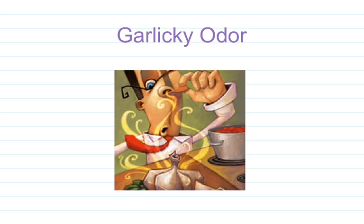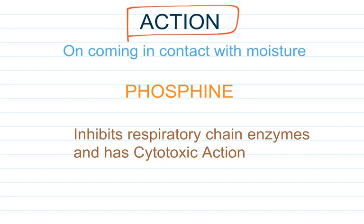Aluminium Phosphate has a garlicky odor, which is one of the main characteristic features of Cellphos poisoning. Now let's talk about the action of Aluminium Phosphate. On coming in contact with moisture, Aluminium Phosphate liberates Phosphine. This Phosphine inhibits respiratory chain enzymes and has cytotoxic action.